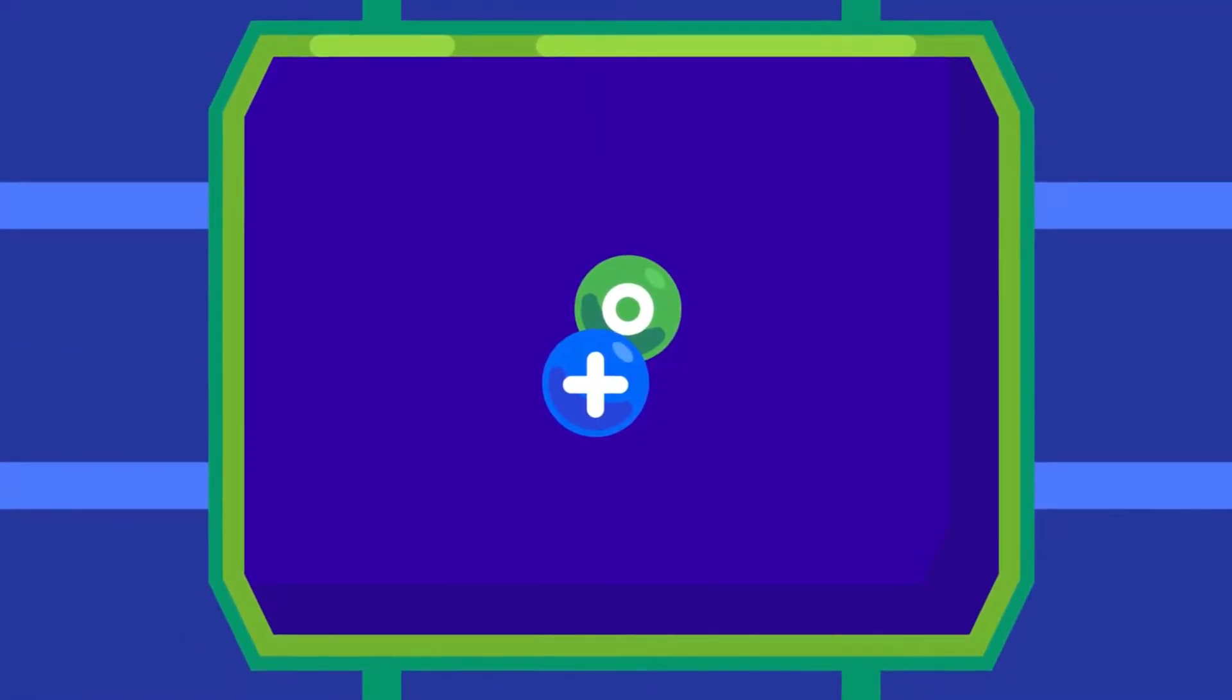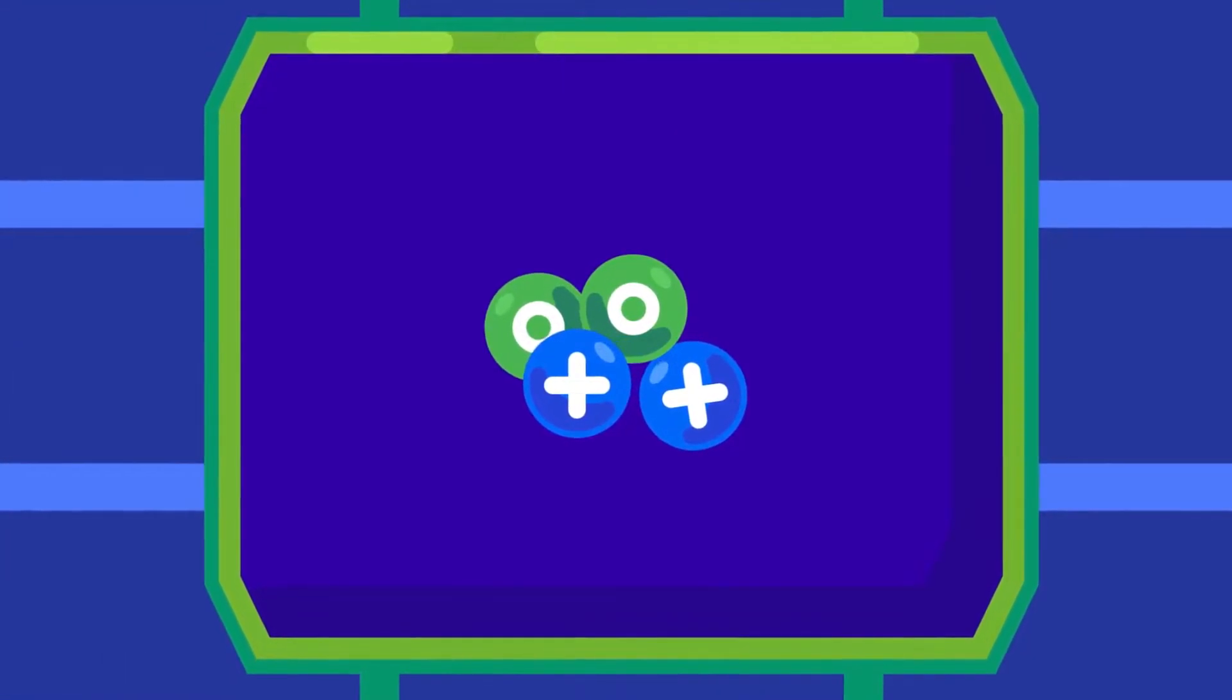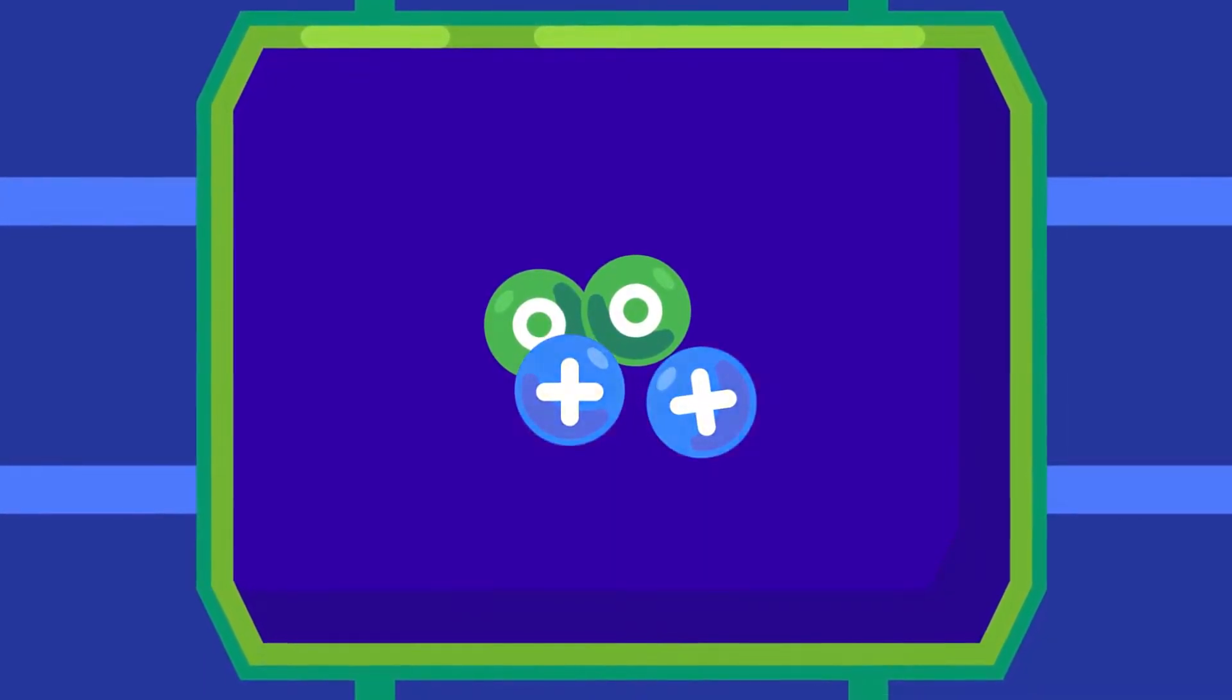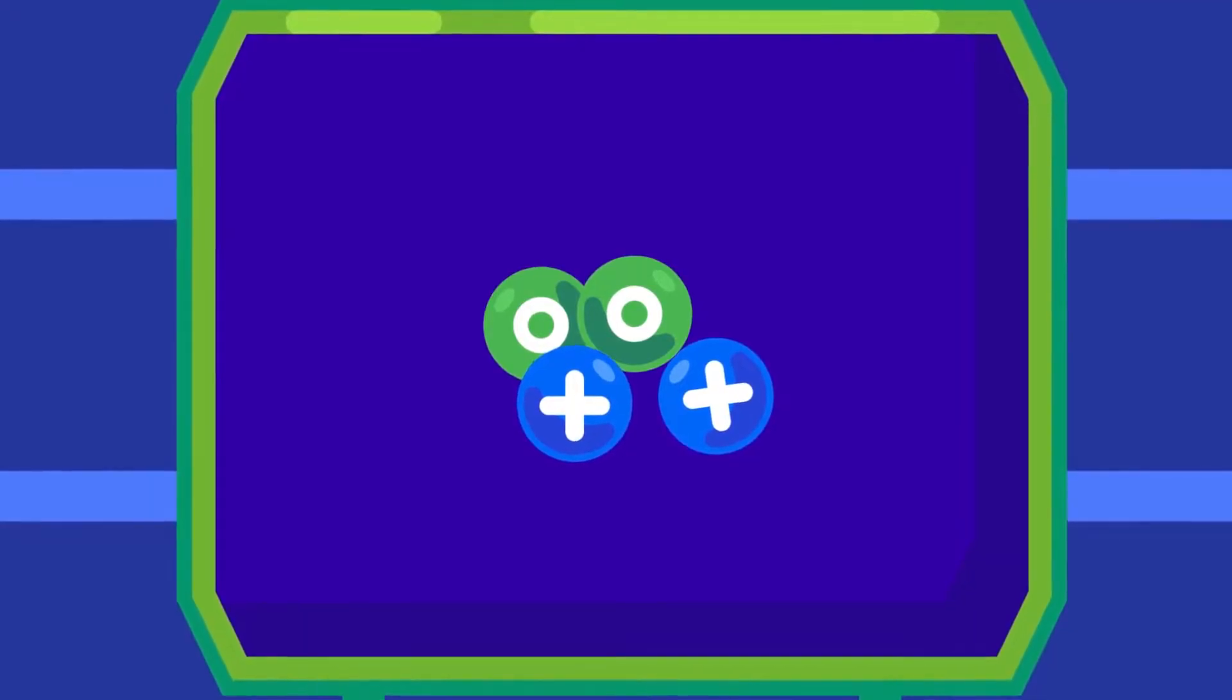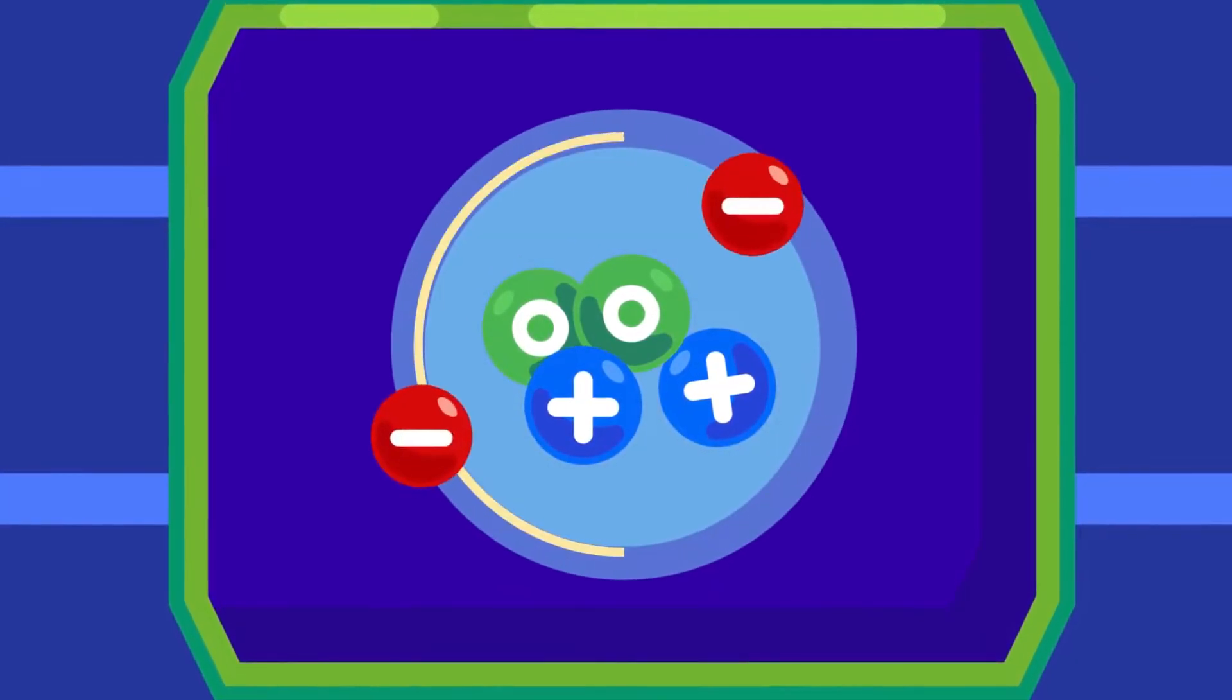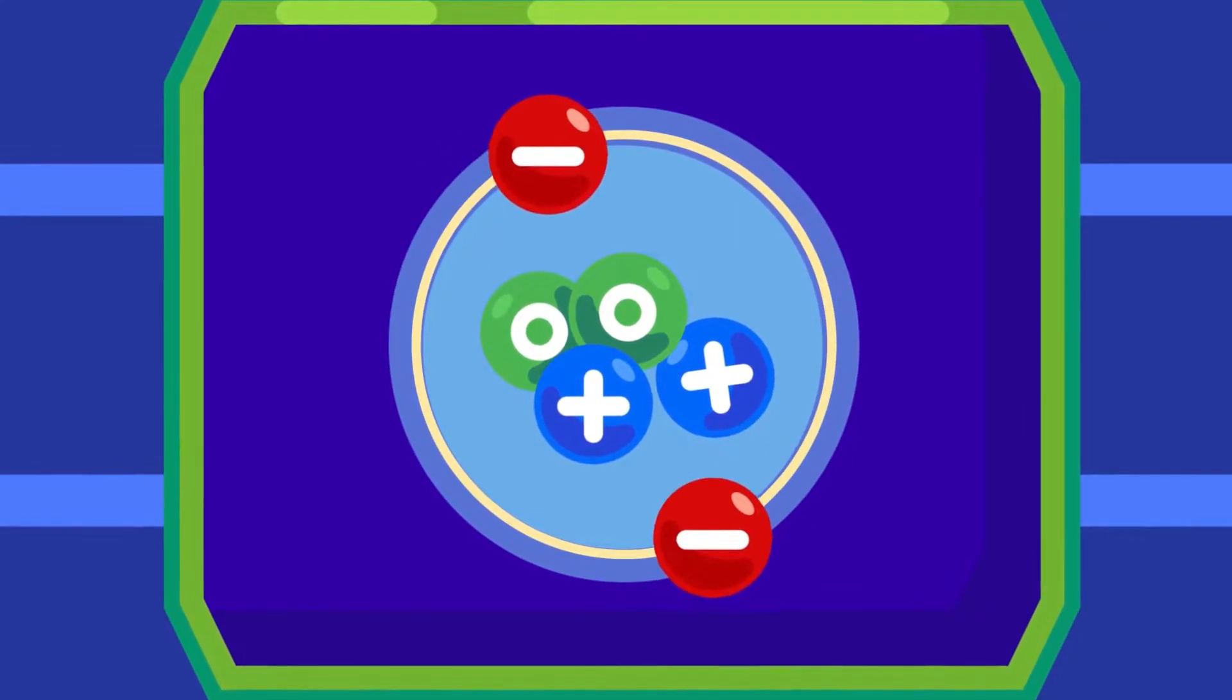The protons and neutrons are tightly packed together in the nucleus of the atom. This gives the nucleus an overall positive charge. The nucleus, as the name suggests, is located at the center of the atom. The electrons move rapidly around the nucleus.